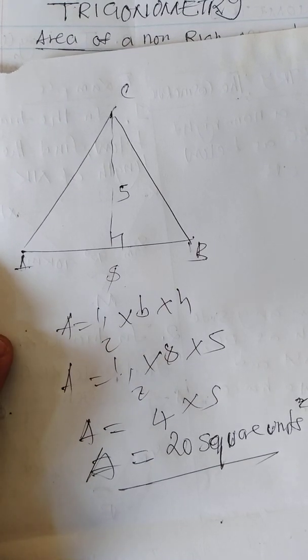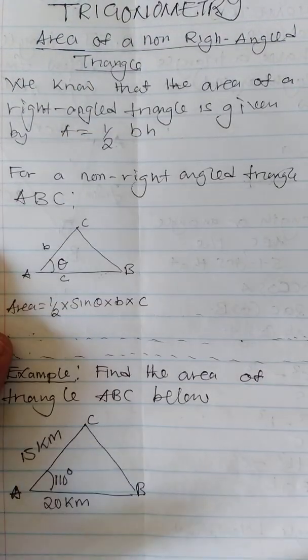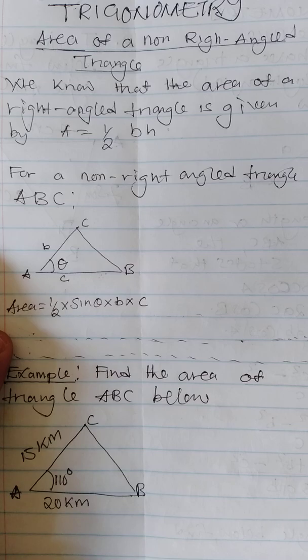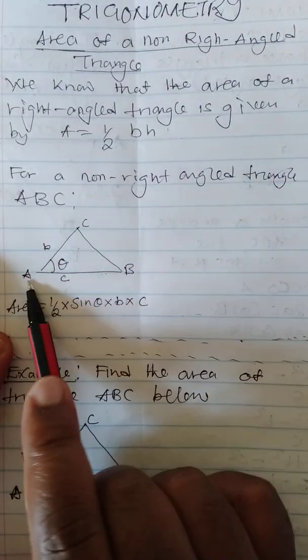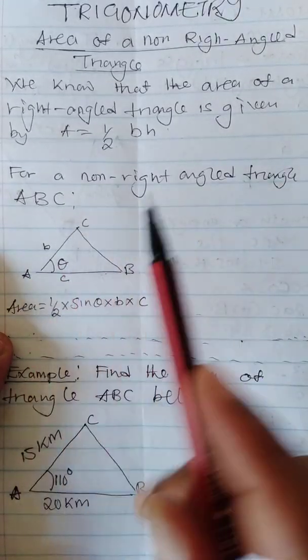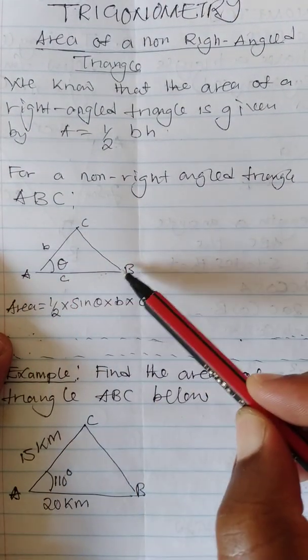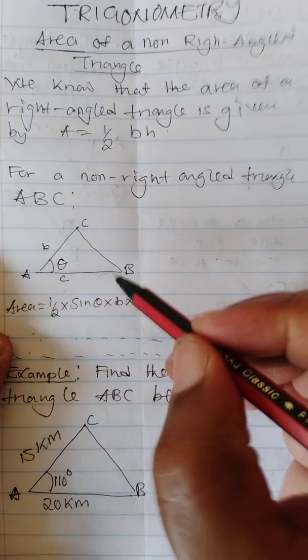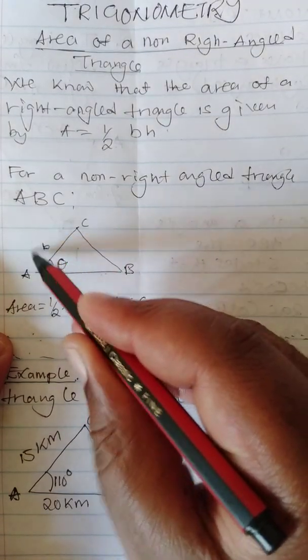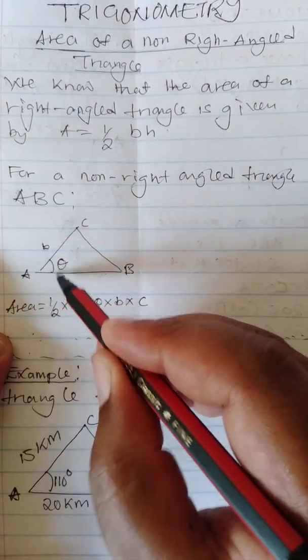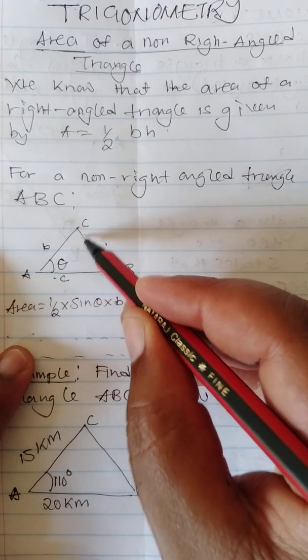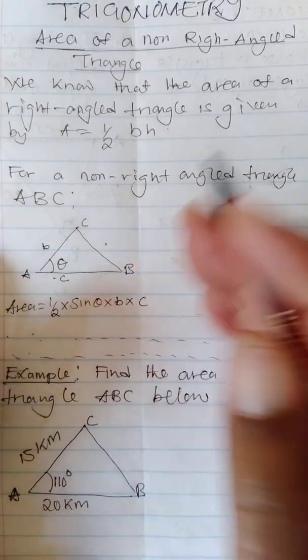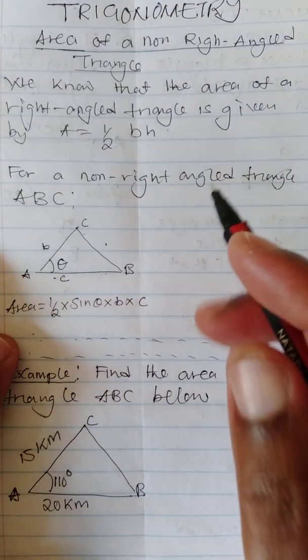We've been using that, but now let's see how we can get the area of a triangle which is not right-angled. For a non-right-angled triangle ABC, if this is angle B, this side will be labeled by small letter b. If this is angle A, this side will be labeled by small letter c.